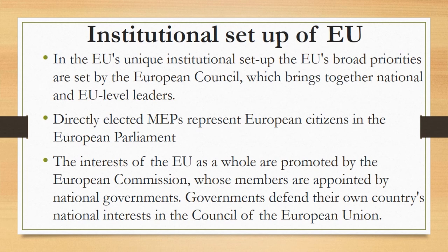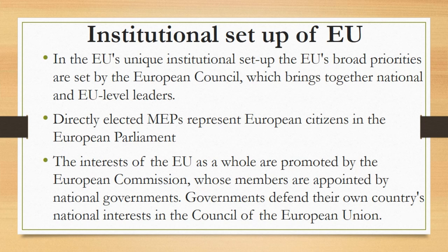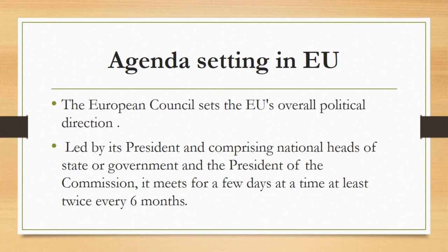Institutional Setup of the European Union: The EU has a unique institutional setup. The EU's broad priorities are set by the European Council, which brings together national and EU-level leaders. Directly elected MEPs represent European citizens in the European Parliament. The interests of the EU as a whole are promoted by the European Commission, whose members are appointed by national governments. Governments defend their own country's national interests in the Council of the European Union. The European Council is led by its president, comprising national heads of state or government, and meets at least twice every six months.